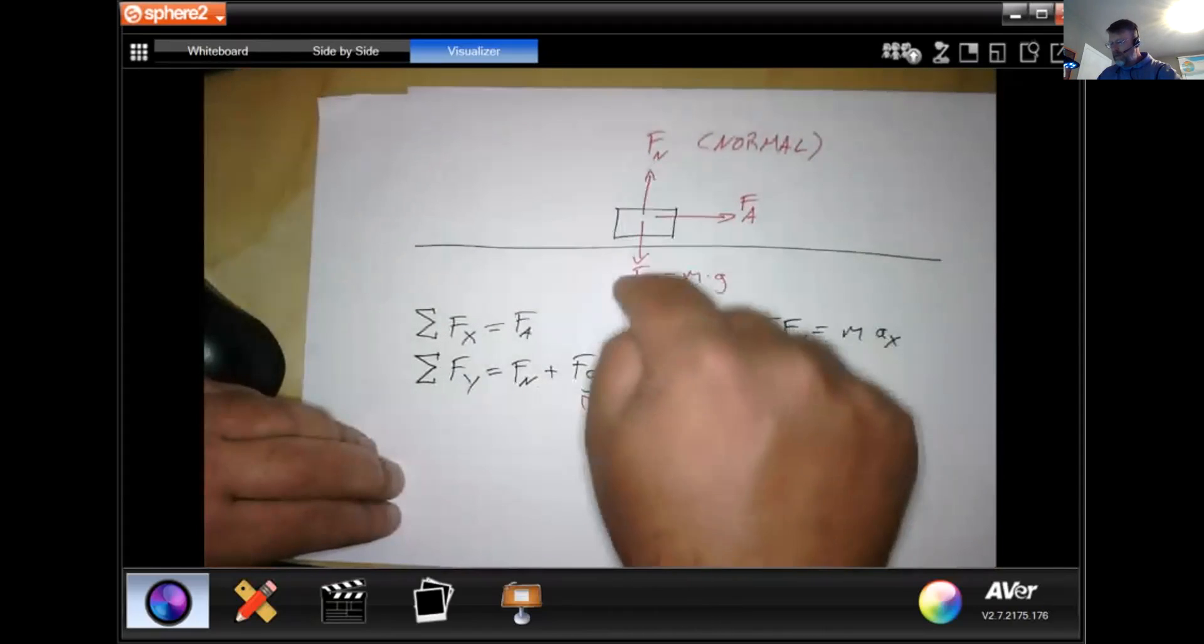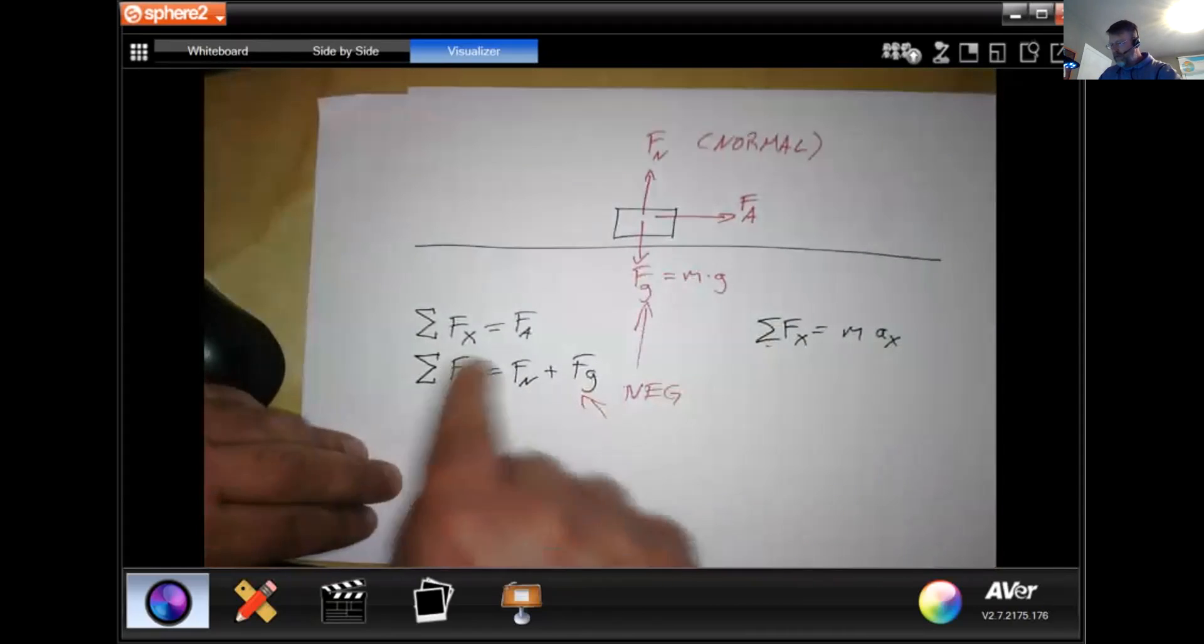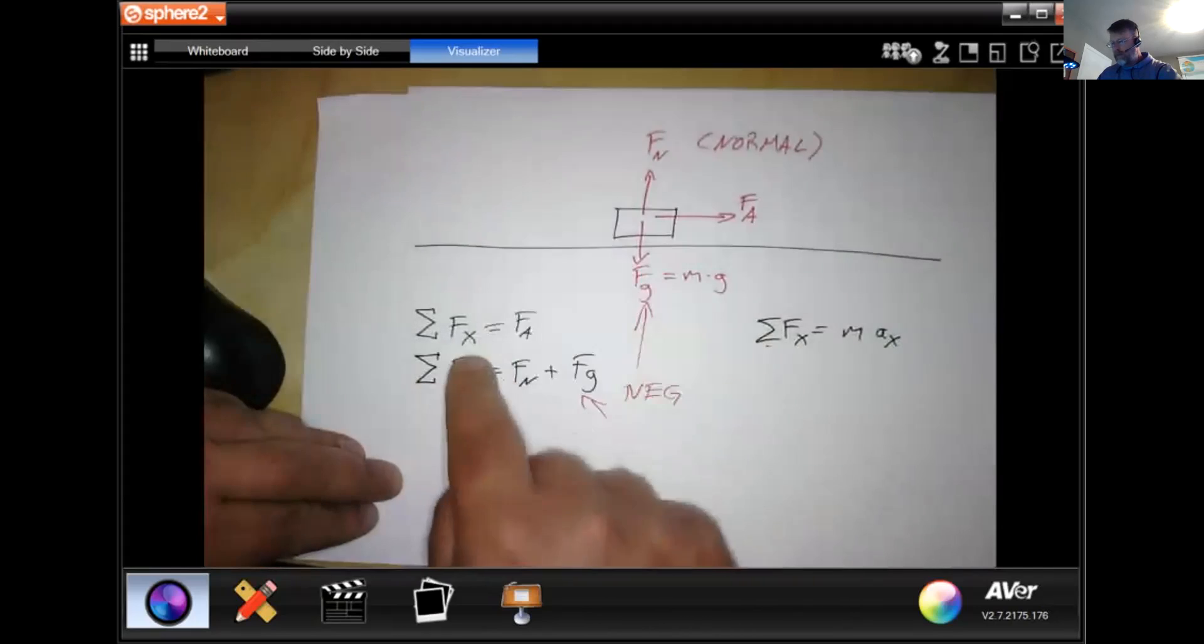We have a normal force pushing up; the normal force, it's important, is always perpendicular to the surface. Okay, and then you have some sort of applied force in one direction. So if these two are equal and opposite, then we're going to get our sum of our forces in the y direction equals zero. Okay, and we're going to see that quite often.